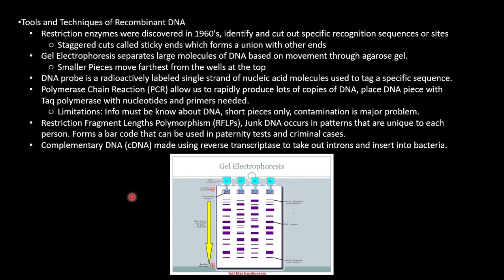Tools and techniques of recombinant DNA. First, we use restriction enzymes, which were discovered in the 1960s. They identify and cut out specific recognition sequences or sites. Staggered cuts called sticky ends form unions with other ends. Gel electrophoresis, like shown in the picture, separates large molecules of DNA based on movement through agarose gel. Smaller pieces move fastest, farthest from the wells at the top. DNA probe is a radioactively labeled single strand of nucleic acid molecules used to tag a specific sequence.